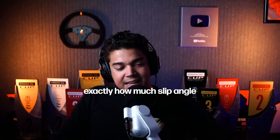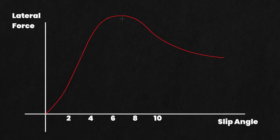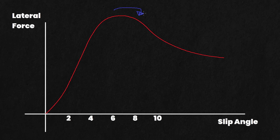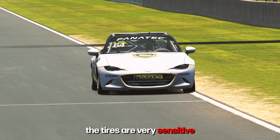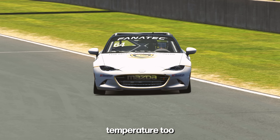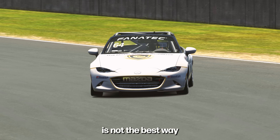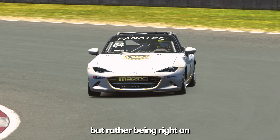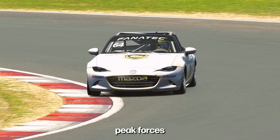A fast driver knows exactly how much slip angle to exploit depending on the situation. You can technically get the same amount of grip in two opposite scenarios — being slightly under the limit versus being over the limit — and achieve the same lap times. In a tire saving scenario, you might want to be slightly under the limit to get good lateral grip without generating too much slip. Or with cold tires, you could technically overdrive the car in a controlled way to get temperatures up. In iRacing, tires are very sensitive to scrubbing or being over the slip angle as they overheat their surface temperature too quickly and lose grip, so being right on top of the optimal slip angle is the best way to generate peak forces without overheating the tires.